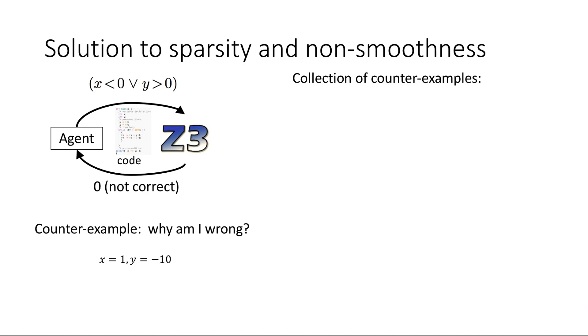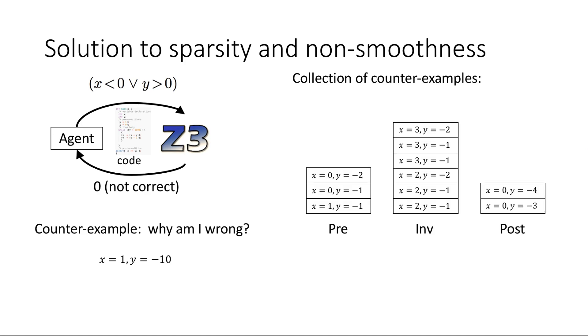So as the interaction with the checker goes, we can collect a set of counterexamples for each stage. Using the fraction of the counterexamples passed, we can interpolate the reward smoothly between 0 and 1.